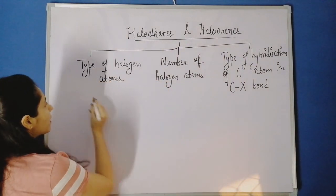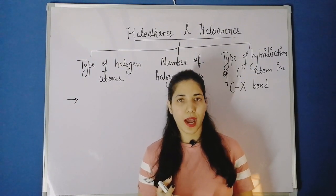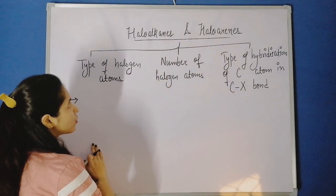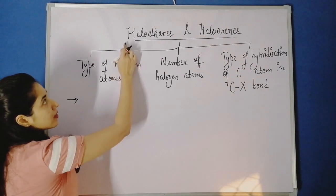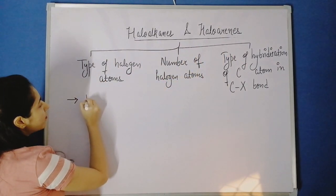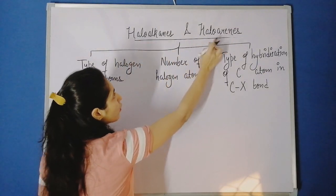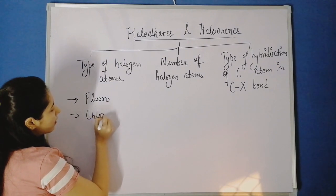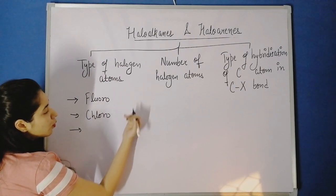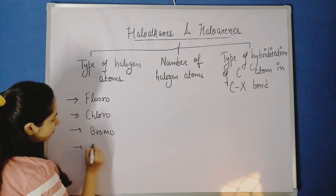The first classification is on the basis of the type of halogen atom. Our halogen can be fluorine, chlorine, bromine, or iodine. So if we have a fluorine atom, the compound would be called fluoroalkane or fluoroarene. If it is chlorine, it will be chloroalkane or chloroarene. So we can classify these compounds as fluoro, chloro, bromo, or iodo compounds.